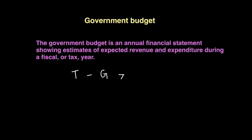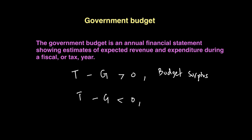If T minus G is greater than zero, we call this a budget surplus. On the other hand, if T minus G is less than zero, we call that situation a budget deficit.